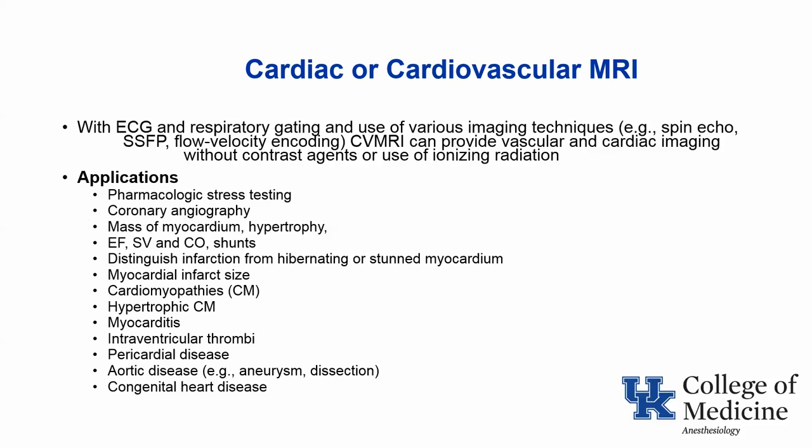There has been a great expansion of the use of MRI in cardiovascular disease. Initially only static imaging was possible, but nowadays using ECG and respiratory gating and novel imaging techniques such as spin echo and flow velocity encoding, it is possible to get both imaging of blood flow and cardiac structures. Cardiac MRI has innumerable applications to cardiovascular diagnosis, most notably evaluation of cardiomyopathy, mass of the ventricles, intraventricular thrombi, coronary artery disease, etc.